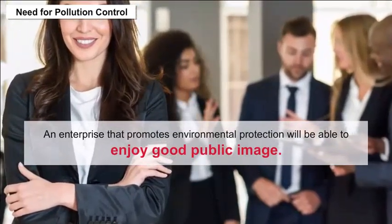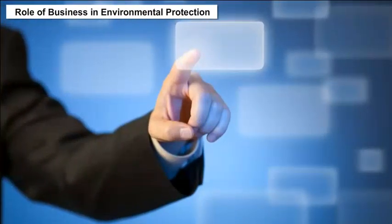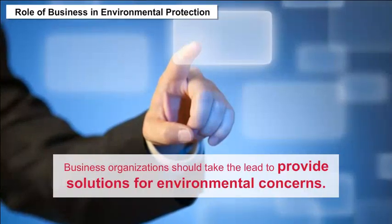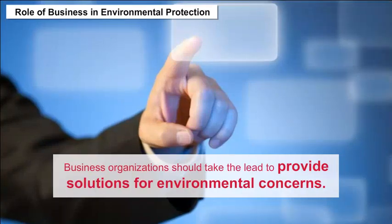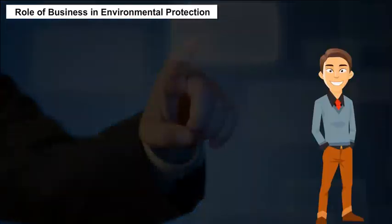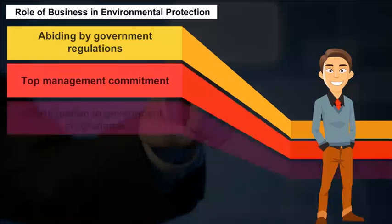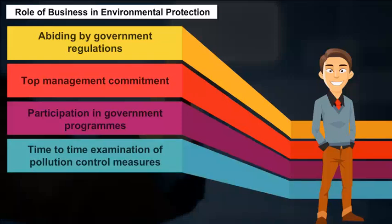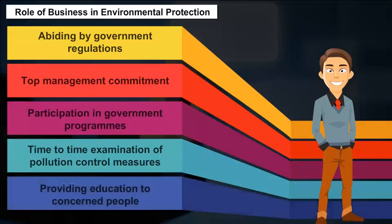A sound business policy to install pollution control devices within the premises can decrease the risk of liability. An enterprise that promotes environmental protection will be able to enjoy a good public image. Role of Business in Environmental Protection: Business organizations should take the lead in providing solutions for environmental concerns by abiding by government regulations, top management commitment, participation in government programs, regular examination of pollution control measures, and providing education to concerned people.